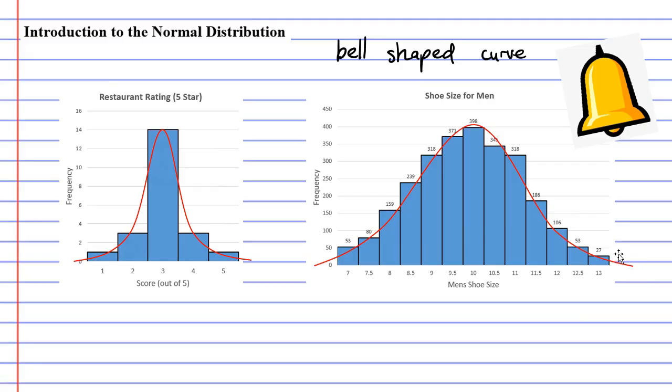If you ever gather data and graph it and get this bell shaped curve, you should be really happy. Data that is normally distributed like this is really useful when you want to make predictions or come up with conclusions.